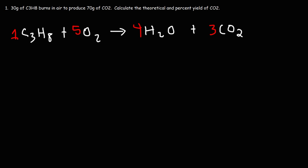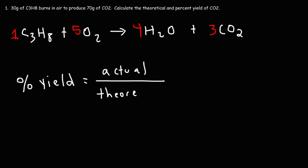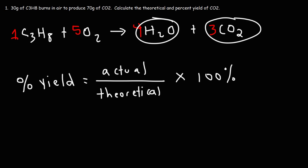Now we can move on to calculating the percent yield. The percent yield equals the actual yield divided by the theoretical yield, times 100%. The yield typically corresponds to the product of the reaction — in this case CO2. The actual yield is the amount of product actually obtained in the experiment, while the theoretical yield is the maximum we could get if the experiment were 100% perfect.